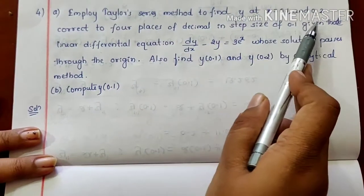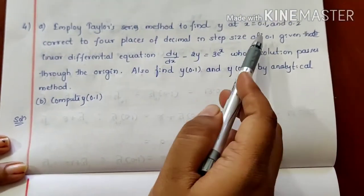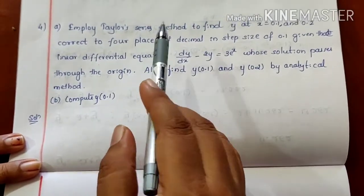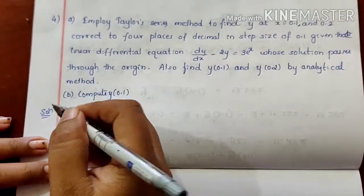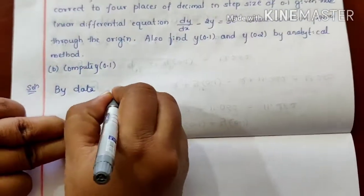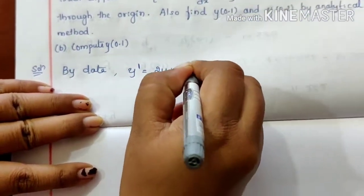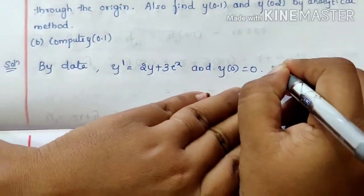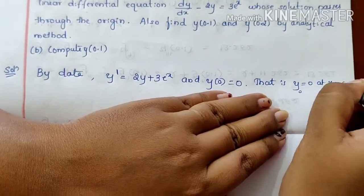We have to solve this example in two steps. The step size is 0.1, so we find y for 0.1 and 0.2. The equation passes through the origin means the initial conditions are: x₀ = 0 and y₀ = 0. By data, y dash is equal to 2y plus 3 into e raised to x, and y(0) = 0, that is y₀ = 0 and x₀ = 0.